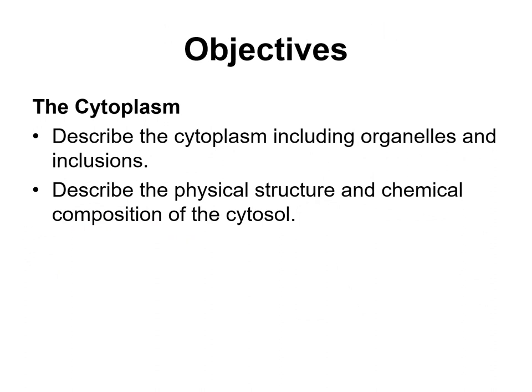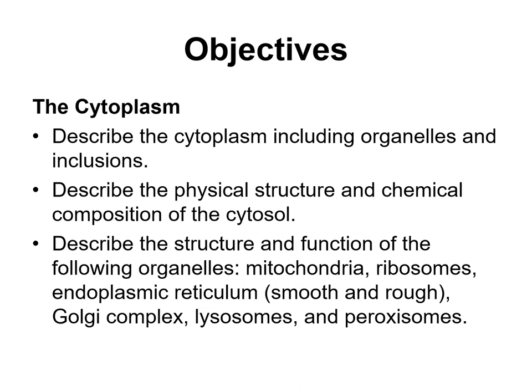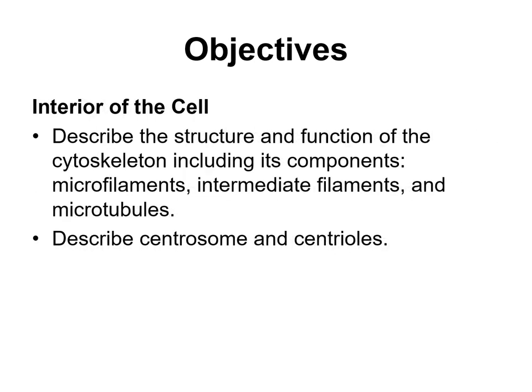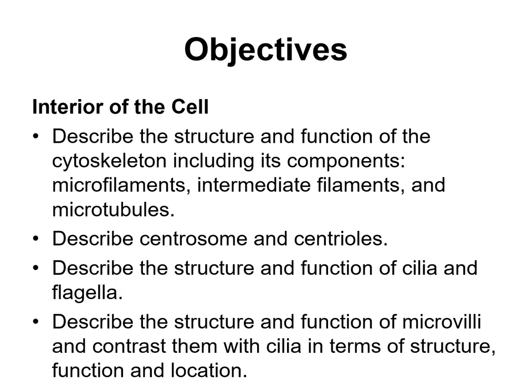We covered quite a bit in this screencast, so let's review the learning objectives: describe the cytoplasm including organelles and inclusions; describe the physical structure and chemical composition of the cytosol; describe the structure and function of mitochondria, ribosomes, endoplasmic reticulum (both smooth and rough), Golgi complex, lysosomes, and peroxisomes; describe the endomembrane system; describe the structure and function of the cytoskeleton including microfilaments, intermediate filaments, and microtubules; describe centrosome and centrioles; describe the structure and function of cilia and flagella; and describe the structure and function of microvilli, contrasting them with cilia in terms of structure, function, and location.